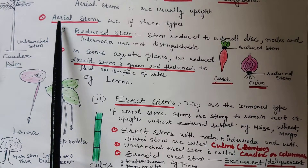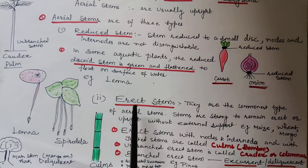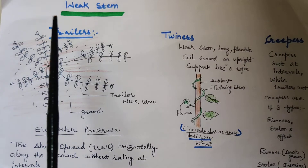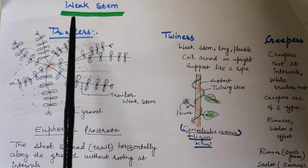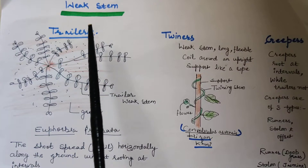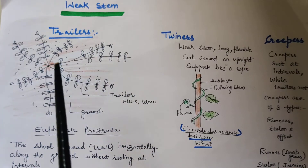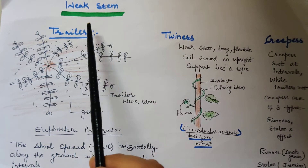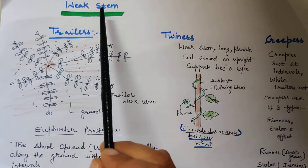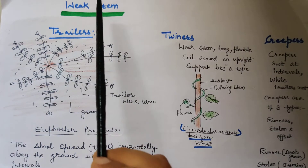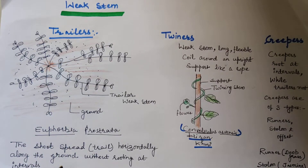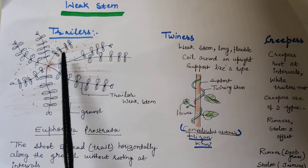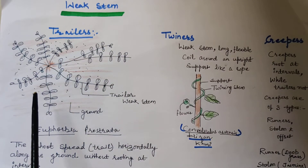The third form under aerial stem is weak stem. Weak stems are thin, soft, delicate and cannot stand erect without some help. The first type under weak stem is trailers — stems which grow horizontally along the ground without rooting at intervals. There is no root formation at intervals. Example of trailer is Euphorbia prostrata.